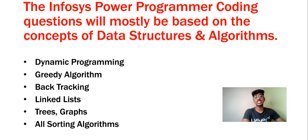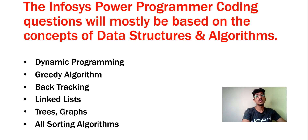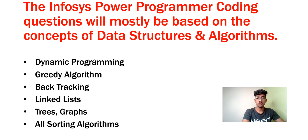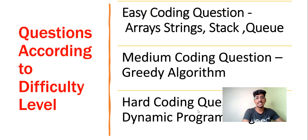The Infosys Power Programmer coding questions will mostly be based on data structures and algorithms. Various topics asked in the coding round include dynamic programming — definitely there will be one difficult question from DP — and greedy algorithm, from which there will be one medium difficulty question. Other topics include backtracking, linked lists, trees and graphs, and all sorting algorithms. These are the main topic areas from which Infosys generally asks questions.